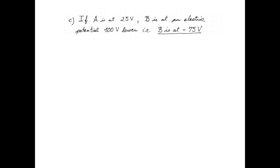If the potential at A is 25 volts, and B is at an electric potential 100 volts lower, it means that B is at an electric potential of negative 75 volts.